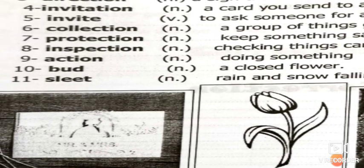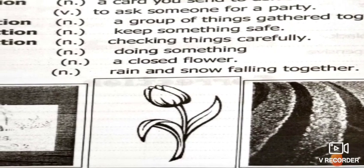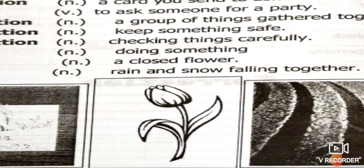Number nine: 'action' — doing something, or adventure. Number ten: 'bud' — B-U-D — means a closed flower. Number eleven, the last word: 'sleet' — rain and snow falling together.